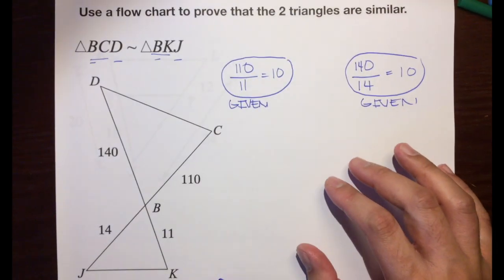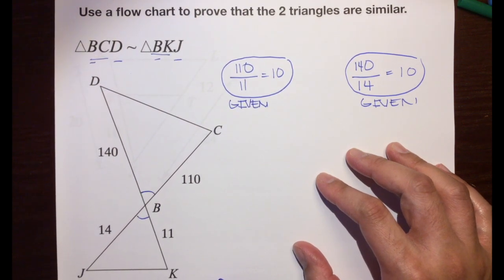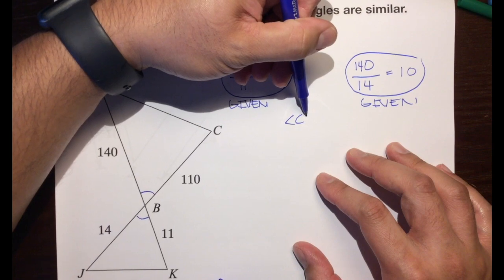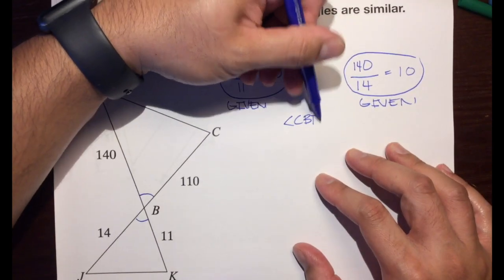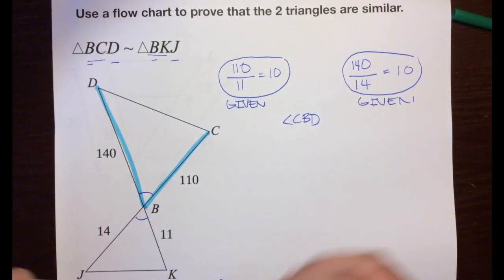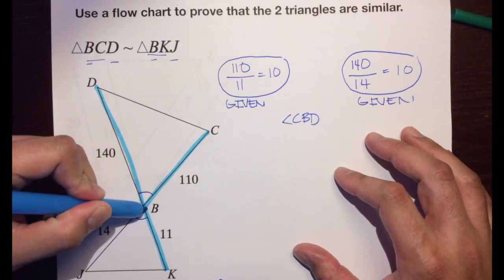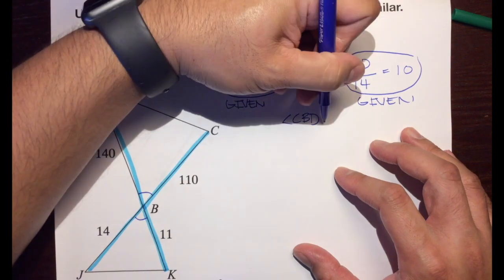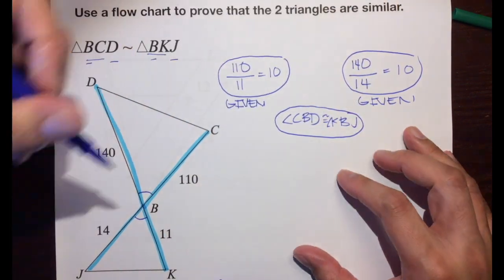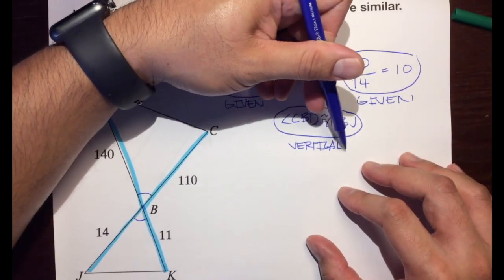Let's see if we can use side-angle-side. What kind of angles are these two right here? These are vertical angles. And what's true about vertical angles? They're congruent. So we can say that angle CBD is congruent to angle KBJ. Why are they congruent? Because they're vertical angles — so our reason is vertical angles.